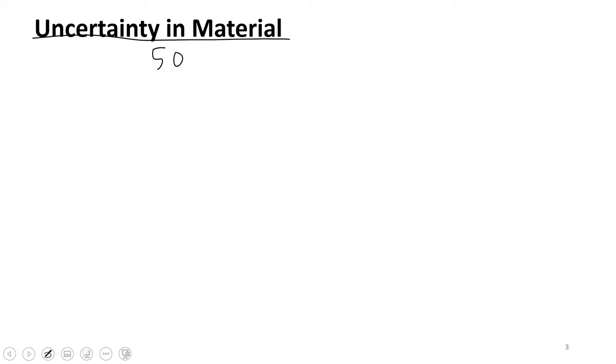Next, let's consider the second category of risk: uncertainty in material. This occurs even with something as controlled and familiar as steel. For example, if you have 50 KSI steel, that 50 KSI refers to a yield stress of 50 kips per square inch — 50,000 pounds per square inch. However, what that really is, is a rated minimum.